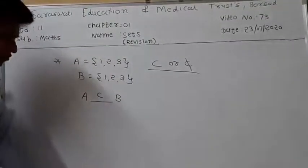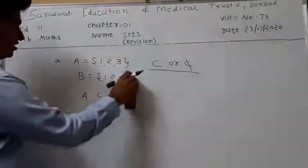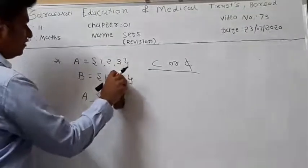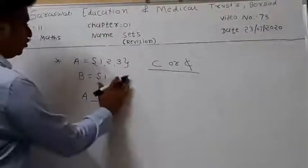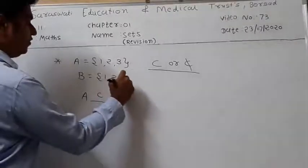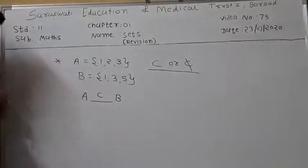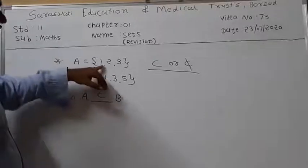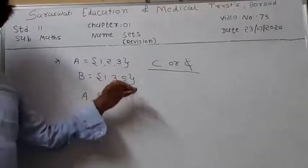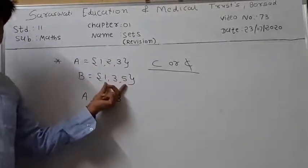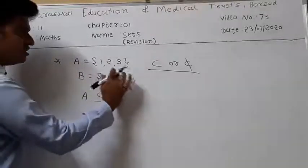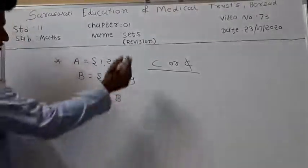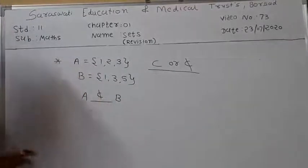Suppose set A equals {1, 2, 3} and set B equals {1, 3, 5}. Is A a subset of B? Not all elements of set A are present in set B — 1 is present, 3 is present, but 2 is not present in set B. So the answer is: A is not a subset of B.